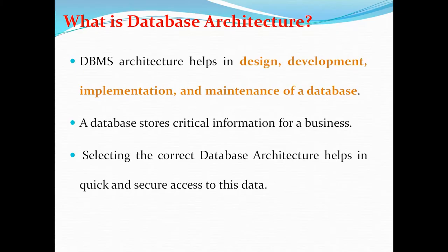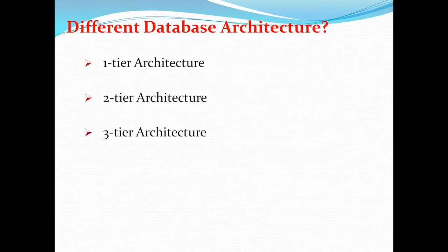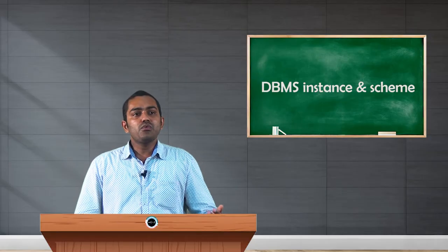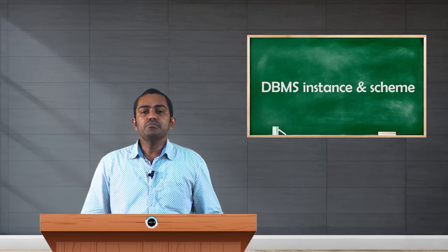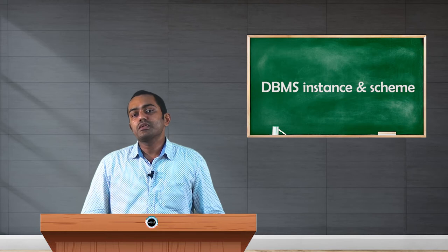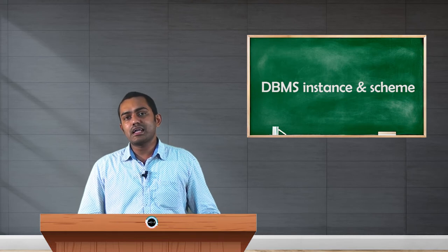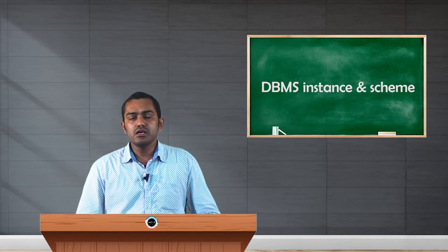We have different types of architectures in a database management system. These are categorized into Tier 1 architecture, Tier 2 architecture, and Tier 3 architecture. We will look at how the architecture is classified in each of these categories.